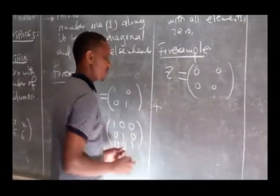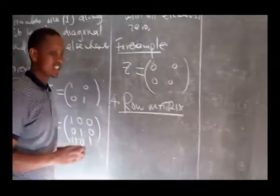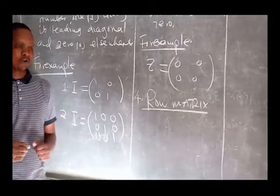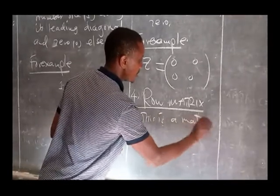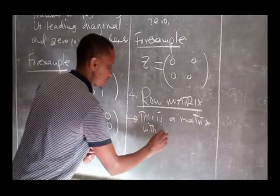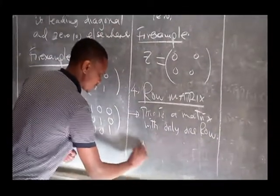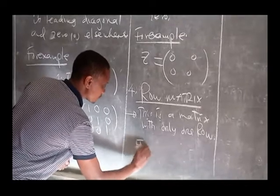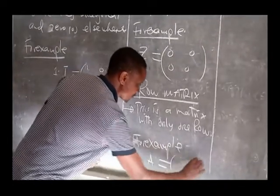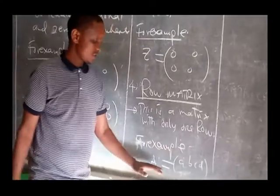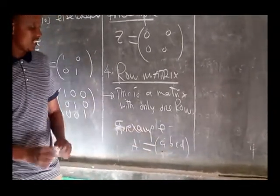We have another type of matrix — we call it a row matrix. A row matrix is a matrix with only one row. For example, if we have matrix A equal to this element, we call it a row matrix because it has only one row. So this is a row matrix.